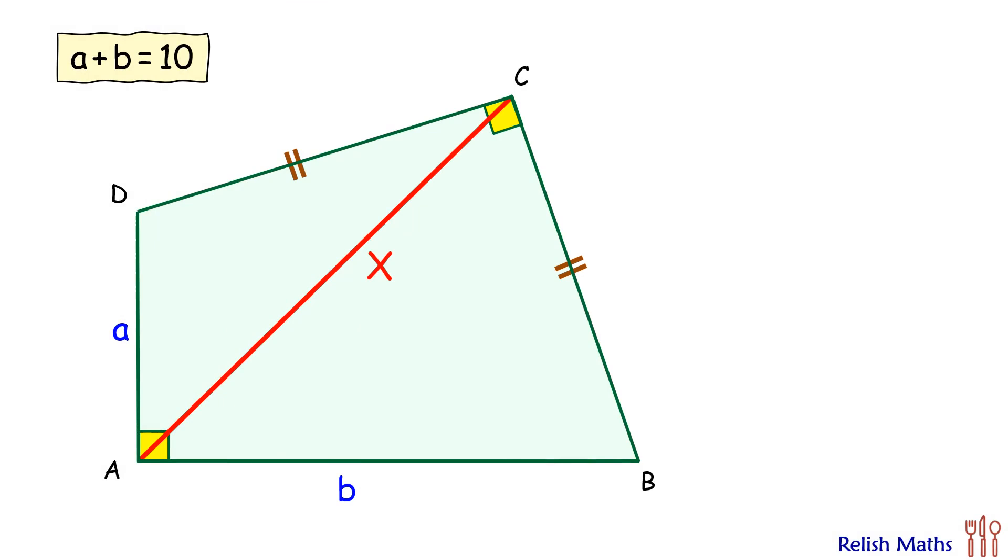Let's check the solution proposed by Mr. Hadi. So here DC and CB are equal. Let's assume they are y cm each. Let's join the diagonal DB.